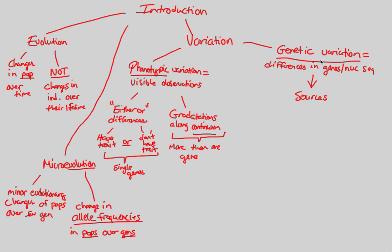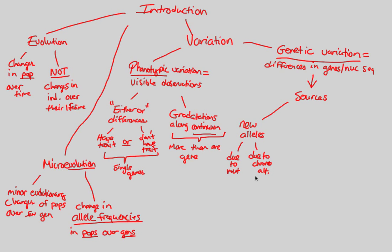The sources specifically for genetic variation are the following. First and foremost, one of the major sources is new alleles altogether. Sometimes new alleles just pop up in populations, and these can often be due to a mutation. Mutations are for the most part rather random — very sporadic, you can't predict them. Or these new alleles could be due to chromosomal alterations, where the chromosome's shape changes, as we know from our human genetics lecture.